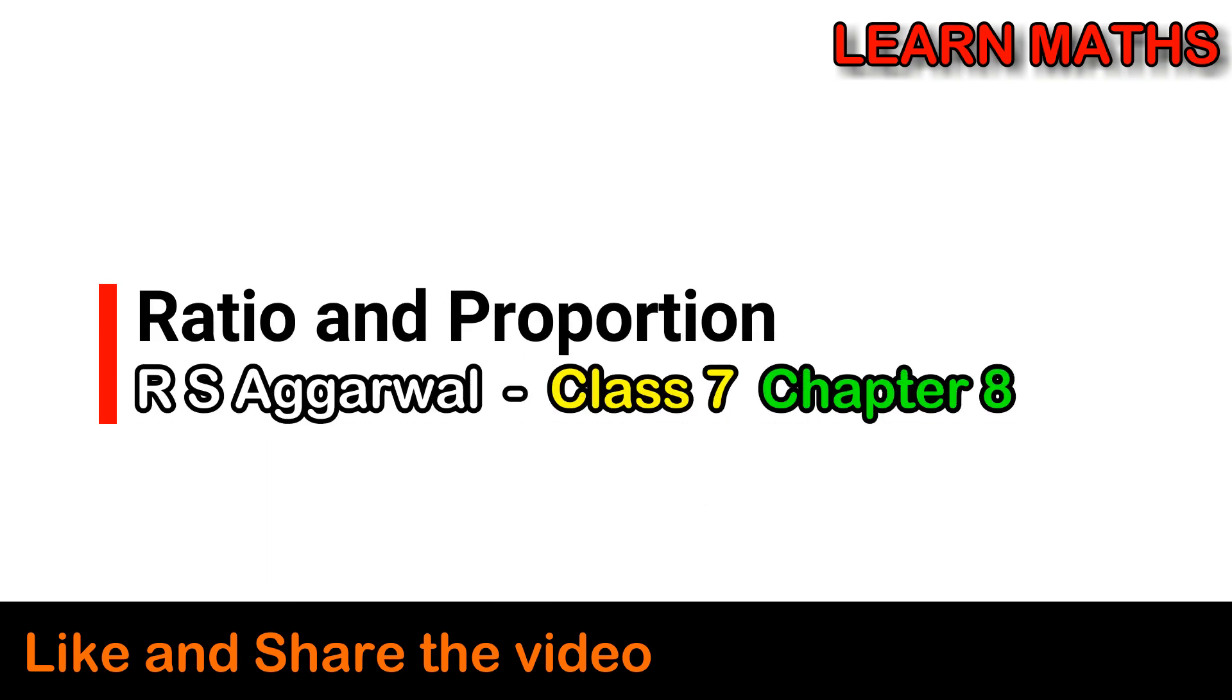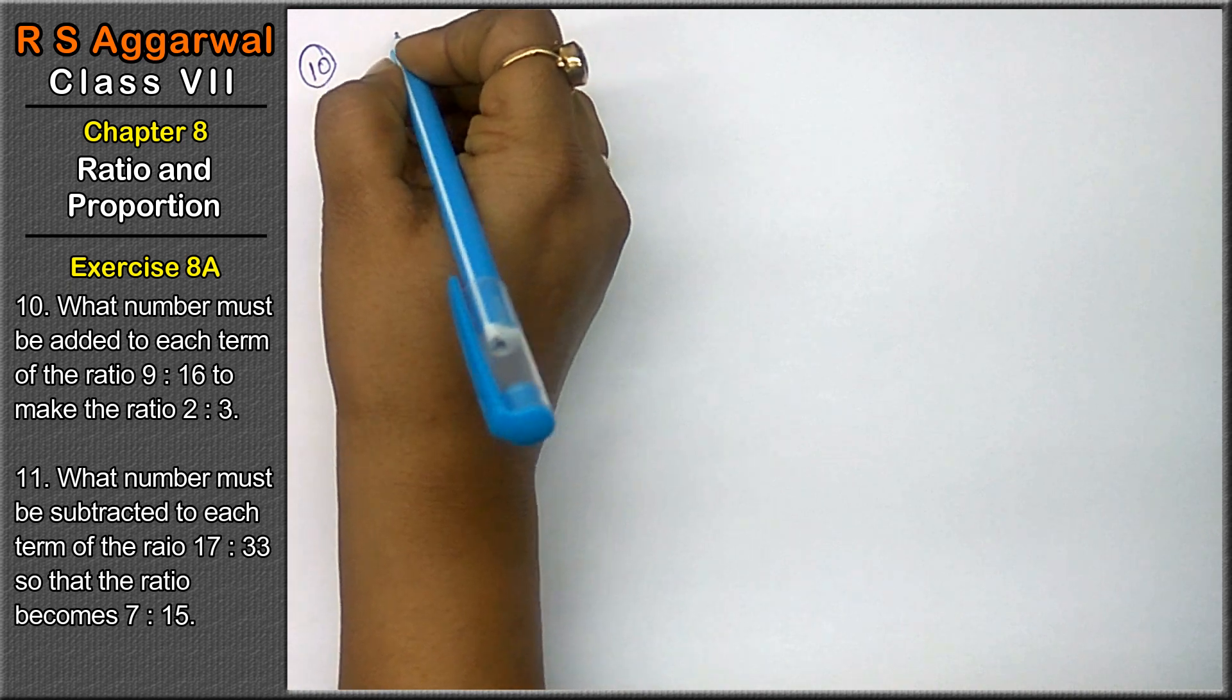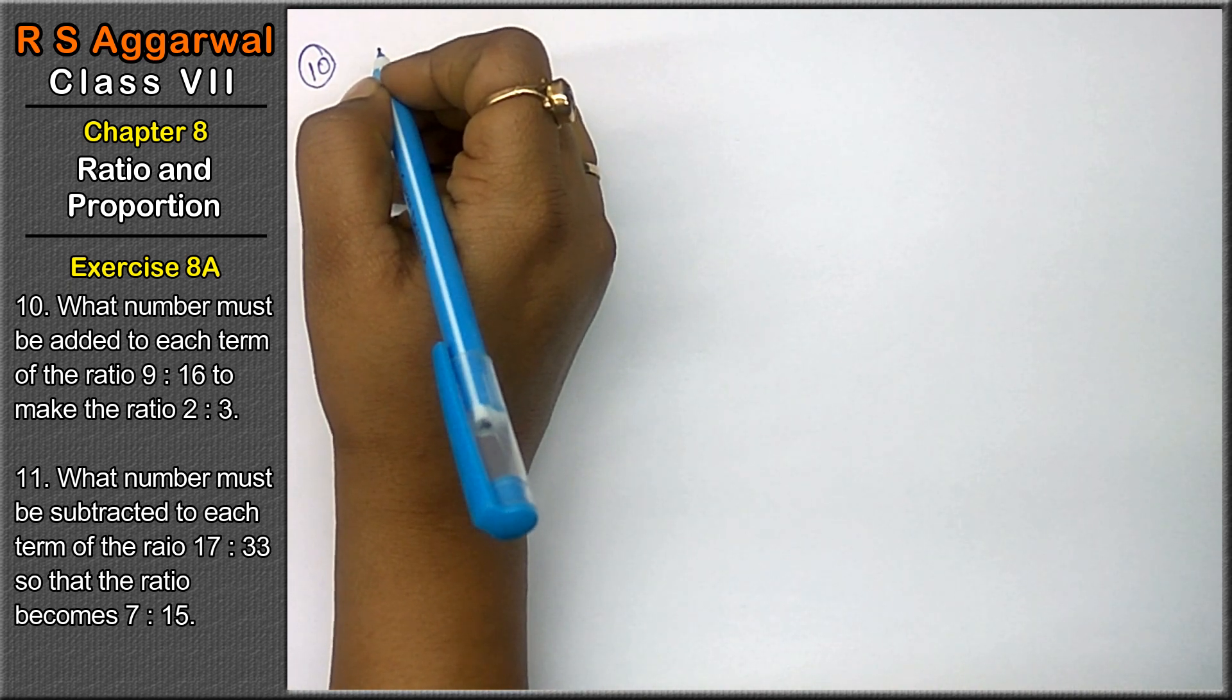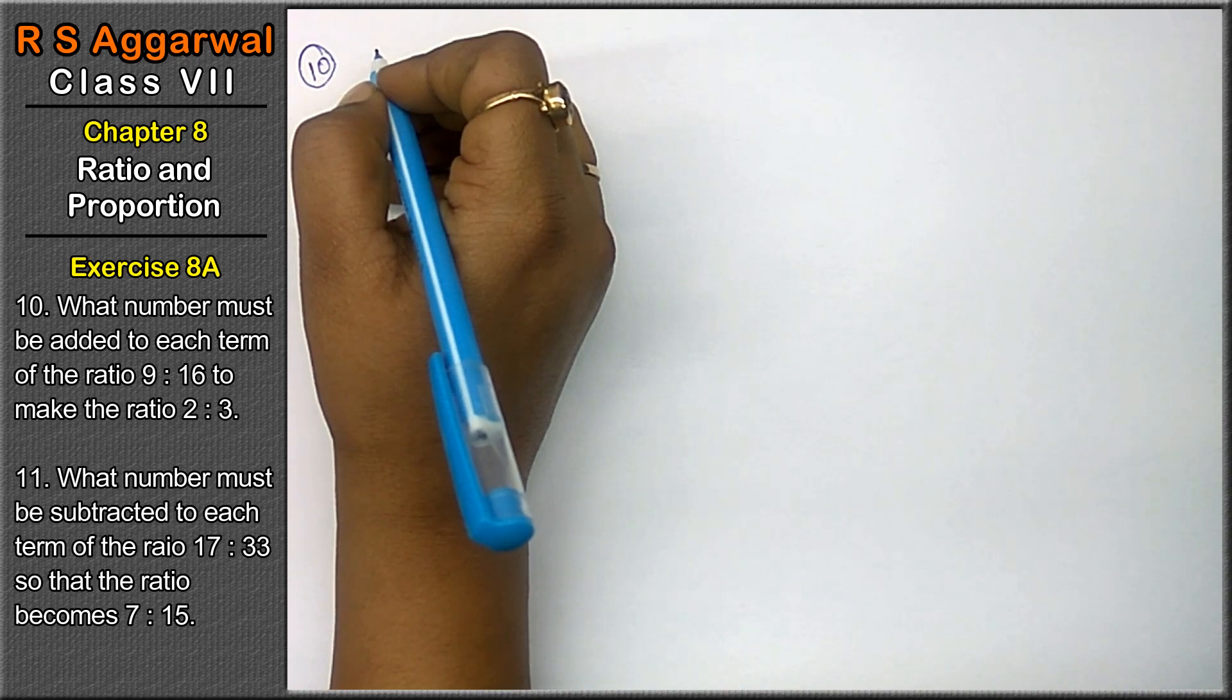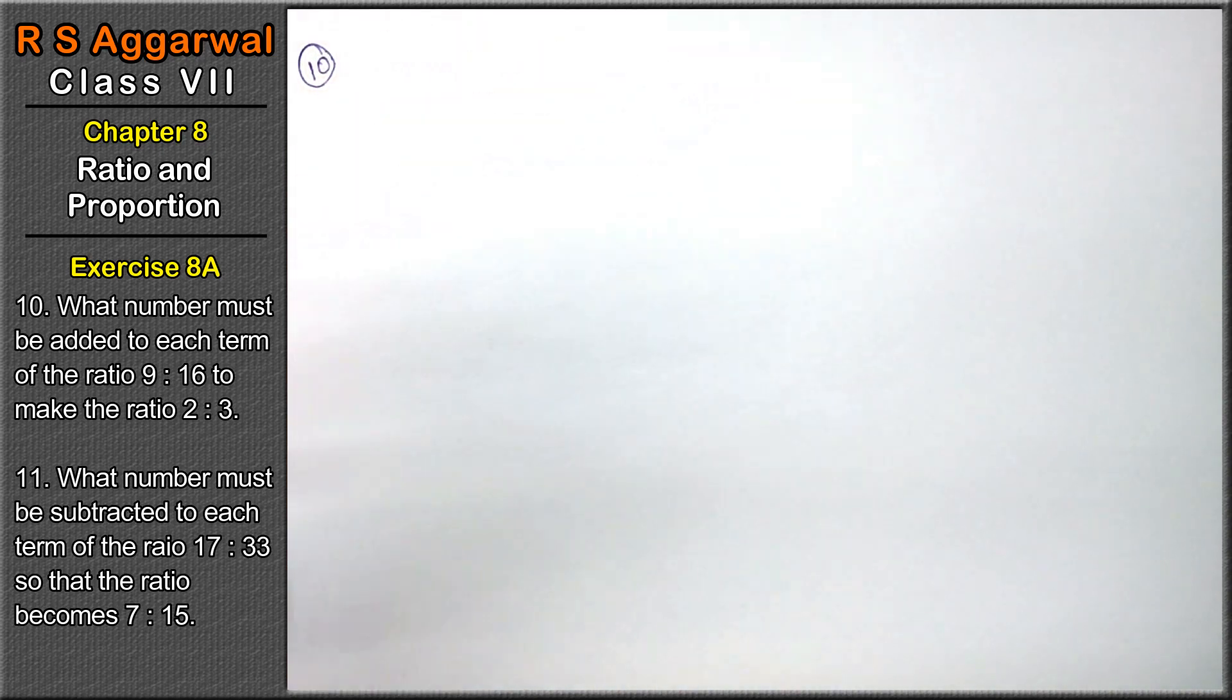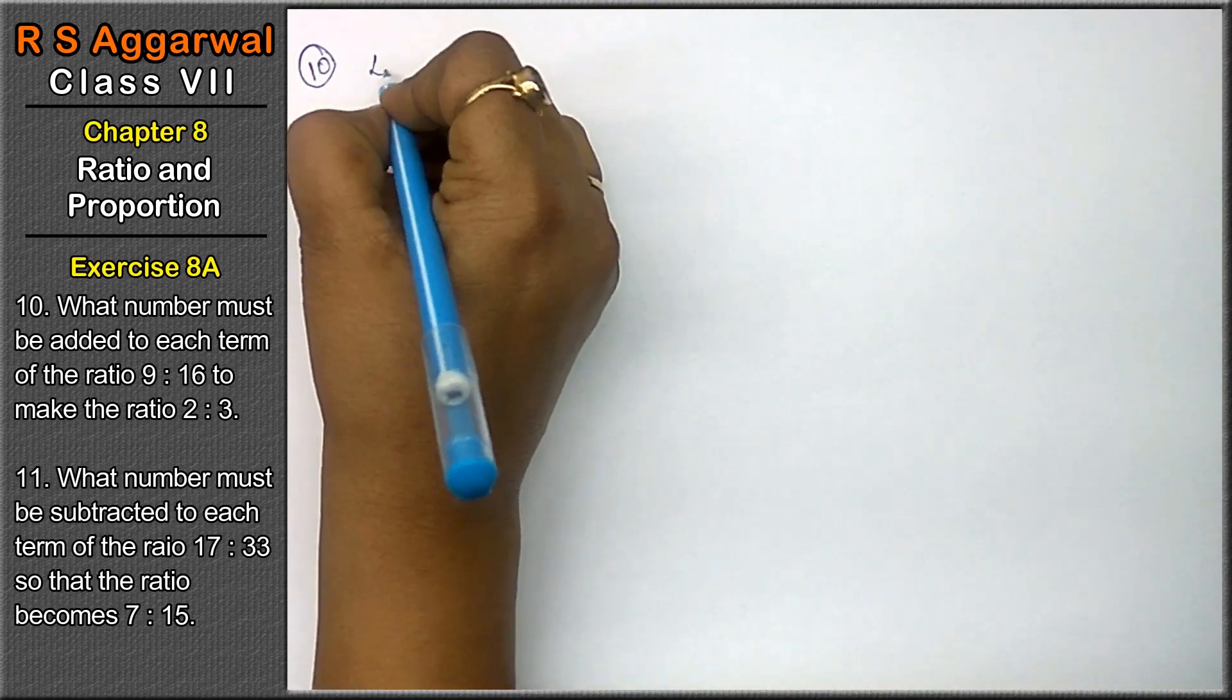Let's do question number 10 of exercise 8A, that is ratio and proportion. What number must be added to each term of the ratio 9 is to 16 to make the ratio 2 is to 3? Let the number